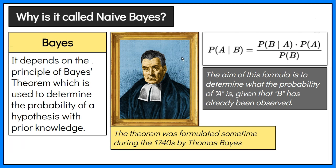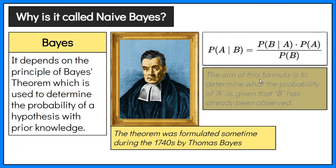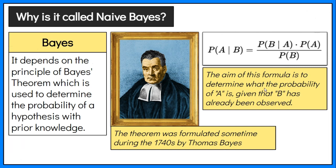The formula for Bayes' Theorem is given as: the probability of A given B is true equals the probability of B given A is true, multiplied by the probability of A, divided by the probability of B. The aim of this formula is to determine what the probability of A is given that B has already happened or been observed.